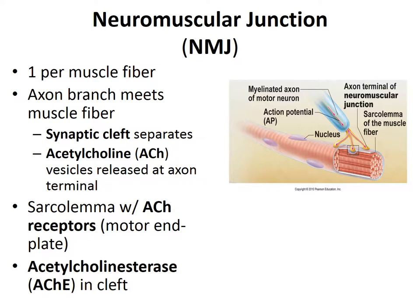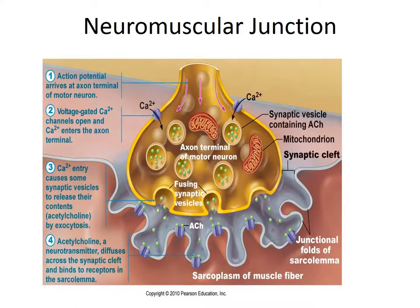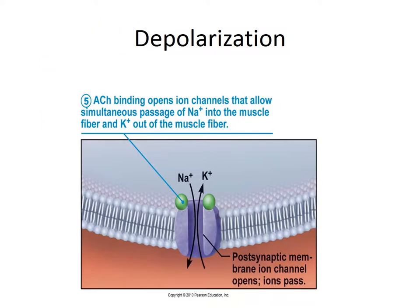The next few slides will demonstrate those steps in more detail, specifically the steps from the action potential to acetylcholine being released across the synaptic cleft. Generating the action potential of the muscle causes a depolarization of the membrane. The electrical conditions of a resting sarcolemma, also called the resting membrane potential, is said to be polarized — that is, the extracellular environment is more positive with respect to the inside of the membrane.